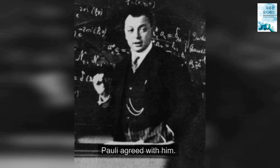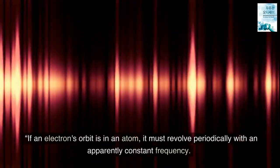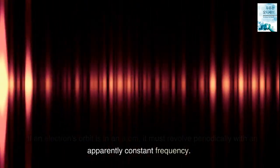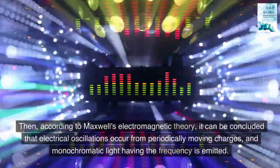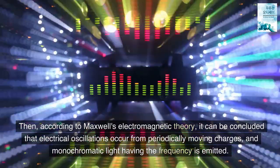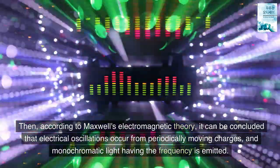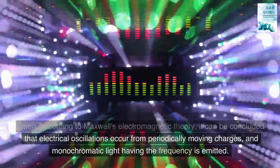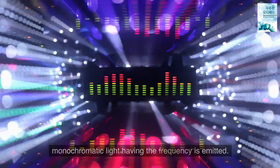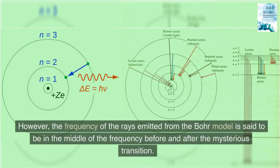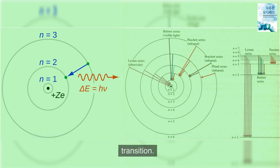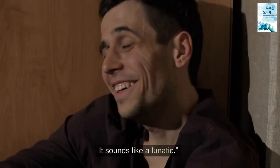Pauli agreed with him. If an electron's orbit is in an atom, it must revolve periodically with an apparently constant frequency. Then, according to Maxwell's electromagnetic theory, it can be concluded that electrical oscillations occur from periodically moving charges, and monochromatic light having the frequency is emitted. However, the frequency of the rays emitted from the Bohr model is said to be in the middle of the frequency before and after the mysterious transition. It sounds like a lunatic.